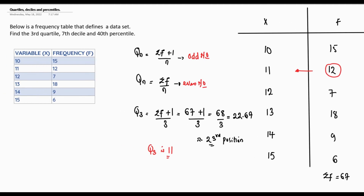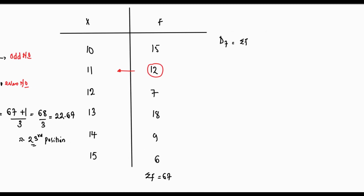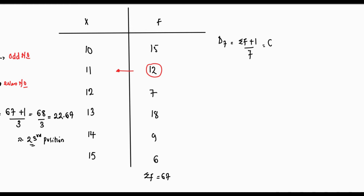Now let's solve for the seventh decile. The formula for D7 equals (summation f + 1) divided by 7. Our summation f is 67, so that's (67 + 1) divided by 7, which equals 68 divided by 7. Doing the math: 68 divided by 7 gives us 9.7, which is approximately 10. This means the seventh decile is located in the tenth position. Since the first frequency is 15, position 10 falls inside that first row, pointing towards the variable x. So our seventh decile D7 equals 10.